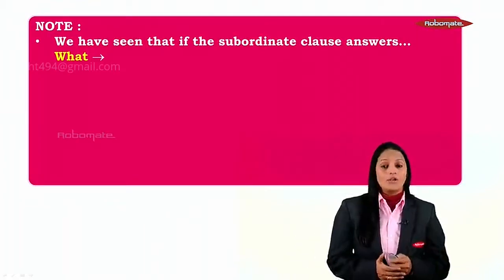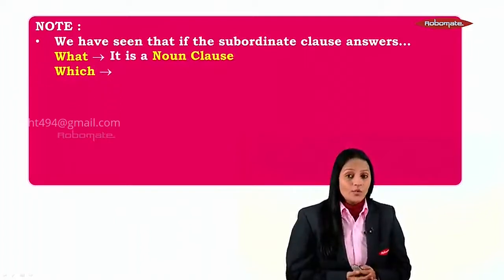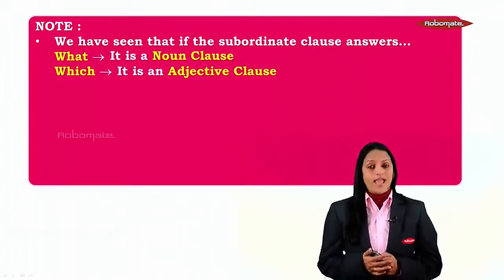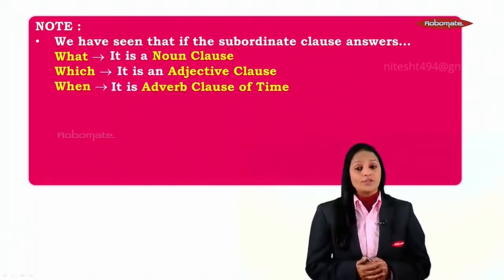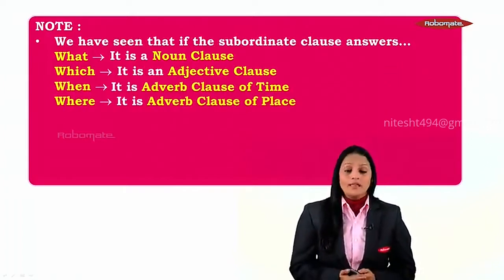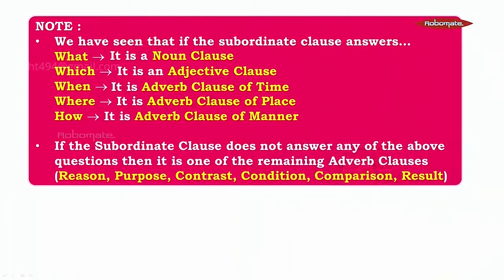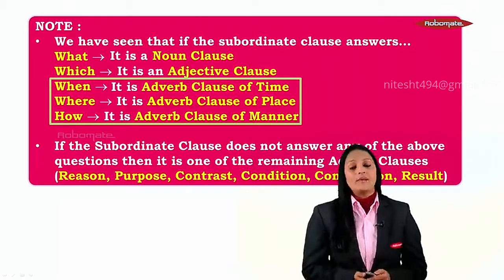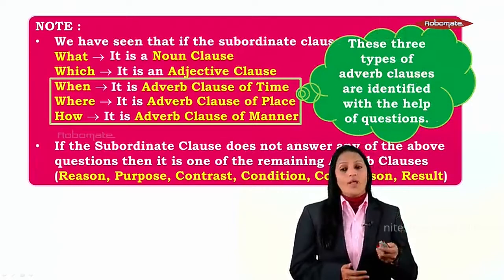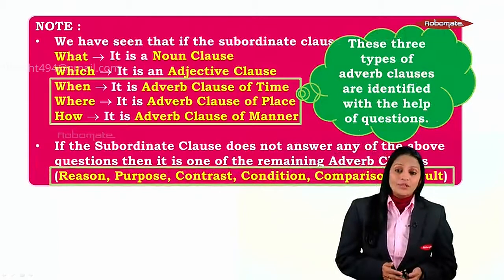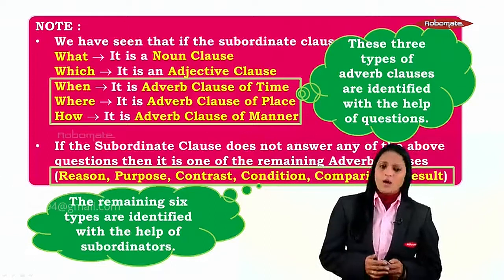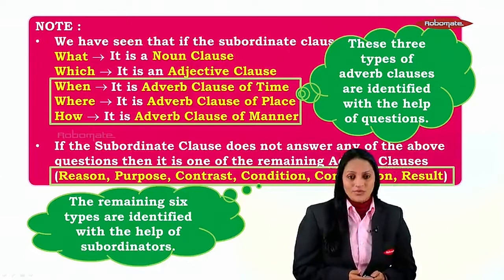So to summarize: if you ask 'what' and the subordinate clause is the answer, it is a noun clause. If you ask 'which', it is an adjective clause. If the answer comes with 'when', it is adverb clause of time; 'where' — adverb clause of place; 'how' — adverb clause of manner. Now, if the subordinate clause does not answer any of these questions, then it is one of the remaining adverb clauses — that is, reason, purpose, contrast, condition, comparison, and result. Those six types will be identified with the help of subordinators, which we will see very soon.